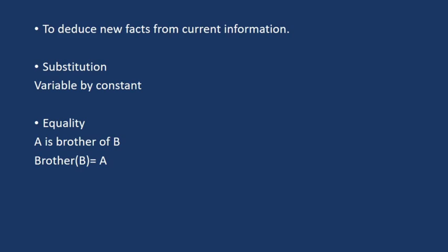Before moving forward, let us have some look on basic terms like substitution and equality. So substitution can be of variable by a constant. It is a fundamental operation performed on terms and formulas and it normally occurs in all types of inference systems.